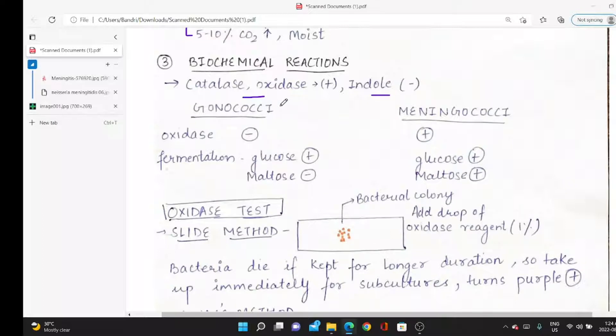Oxidase test is important. Oxidase test is negative for Neisseria gonorrhoeae, and positive for Neisseria meningitidis (meningococcus). Gonorrhoeae ferments glucose; meningococcus ferments glucose and maltose. You can remember: meningococcus is M, so it also ferments maltose.